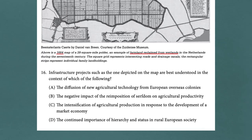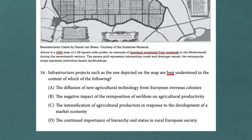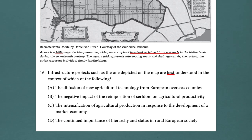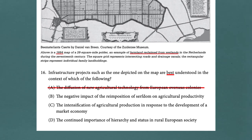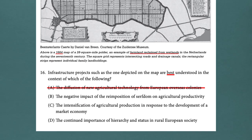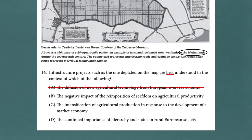Infrastructure projects such as the one depicted in the map are best understood in the context of which of the following? A: The diffusion of new agricultural technology from European overseas colonies — no, most new agricultural technology is developed in Europe itself. B: The negative impact of the re-imposition of serfdom on agricultural productivity — tempting, but the attribution says this is in the Netherlands, and the continuation of serfdom is really going on in Russia and Eastern and Southern Europe. So it can't be B.